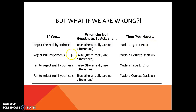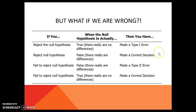If we reject the null hypothesis — so we said that there is a difference — when in reality, in the population, the null is false, meaning there really are differences, so we said there's differences and there really are differences — we did good, we made a correct decision.